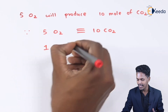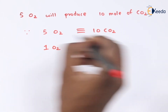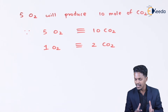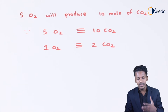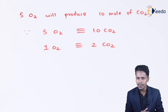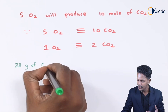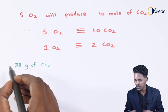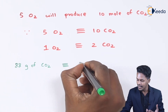So, 1 mole of oxygen produces 2 moles of carbon dioxide. Expressing in terms of molecular mass: 88 grams of CO₂ is produced because of 1 mole of O₂, and 1 mole of O₂ has a molar mass of 32 grams. So 88 grams of CO₂ corresponds to 32 grams of O₂.